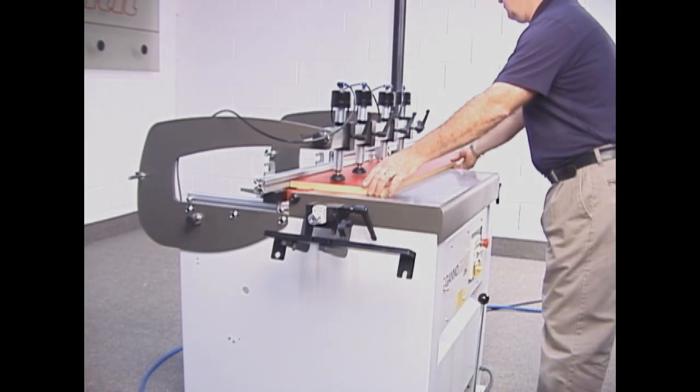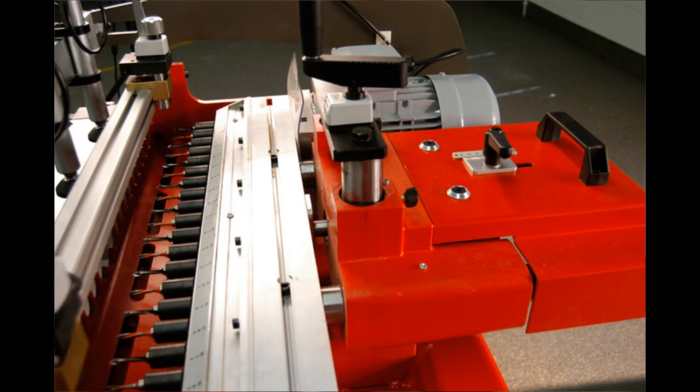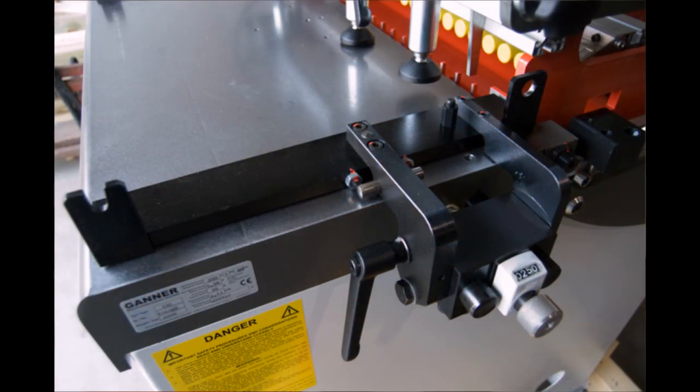There is an all-new torsion box construction of the machine's working table which is both larger and stiffer than the previous design. The table, drill head aggregate and the side fences are all combined in one unit for maximum accuracy.